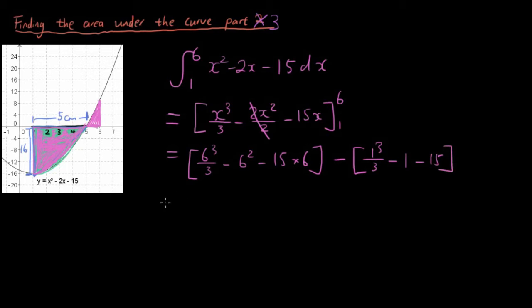Minus 1³/3 - 1 - 15. Let's put that in the calculator, and the answer is negative 38⅓, which we know is incorrect because previously we already calculated the green area to be 42⅔.